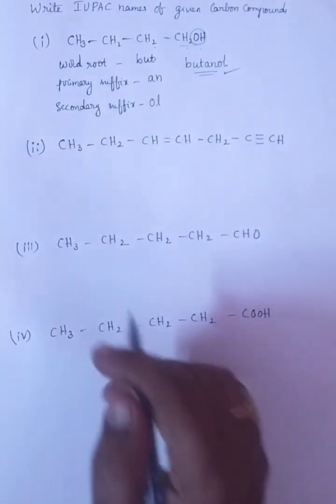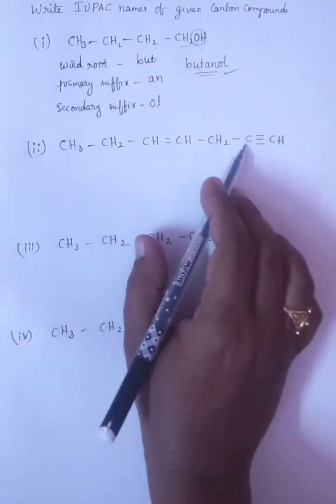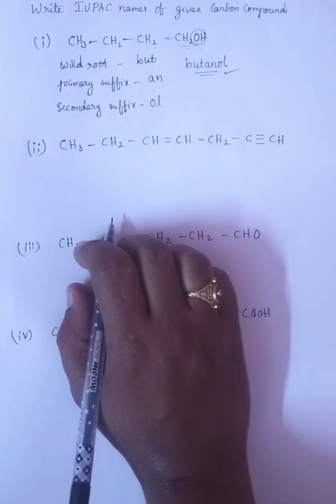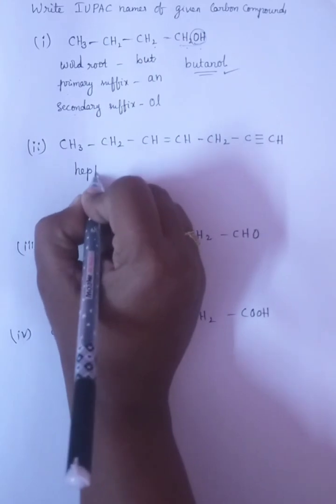Let us try to write for next one. First is 1, 2, 3, 4, 5, 6, 7. How many? Seven. Seven is nothing but we have to write HEPT, word root.